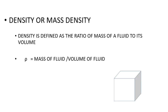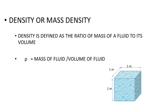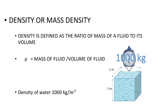To understand this concept of density, let us consider a cube with side 1 meter each, so that its total volume becomes 1 meter cube. Now fill the cube with water and we weigh it, so that we get a total of 1000 kg weight. Hence the density of water is equal to 1000 kg per meter cube. The density is the amount of mass contained in a unit meter cube of liquid.